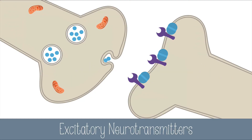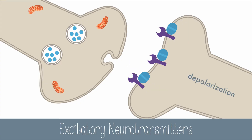Typically, when you learn about neurotransmitters and synapses, you learn about excitatory neurotransmitters. Excitatory neurotransmitters will cause depolarization when the neurotransmitters reach the postsynaptic neuron.